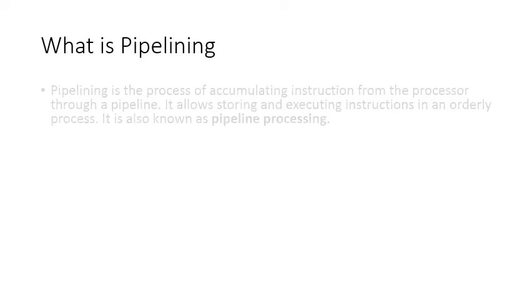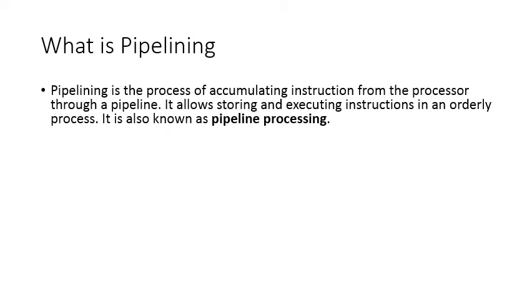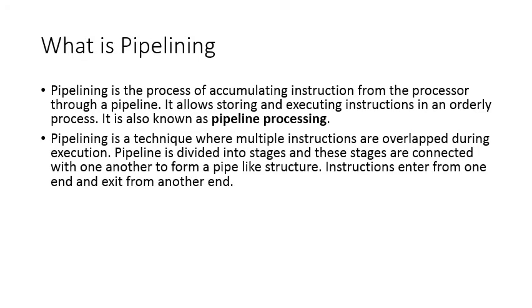What is pipelining? Pipelining is the process of accumulating instructions from the processor through a pipeline. It allows storing and executing instructions in an orderly process. Pipelining is a technique where multiple instructions are overlapped during execution. The pipeline is divided into stages, and these stages are connected to form a pipe-like structure. Instructions enter from one end and exit from the other end, giving you a result which is then processed and readable. Pipelining increases the overall instruction throughput, meaning you can do way more with pipelining.